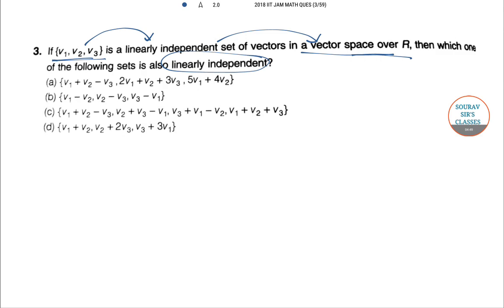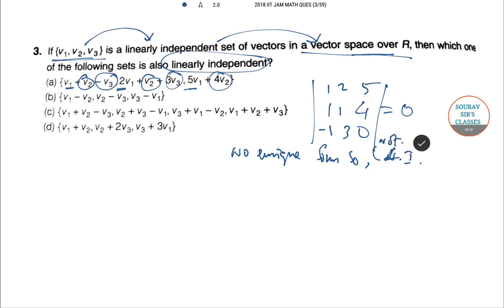The first option has vectors (1,2,5), (1,1,4), and (-1,3,0). The determinant value will be 0 for this, so the equation does not have a unique solution. So they are not linearly independent—not LI.